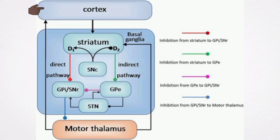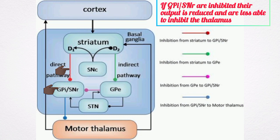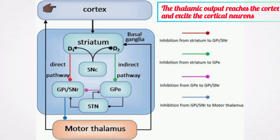If the direct pathway is stimulated, the striatum is excited, increasing its inhibition of the internal globus pallidus and the substantia nigra pars reticularis. If these nuclei are inhibited, their output is reduced — meaning they are less able to inhibit the thalamus, and the thalamic output reaches the cortex and excites the cortical neurons.